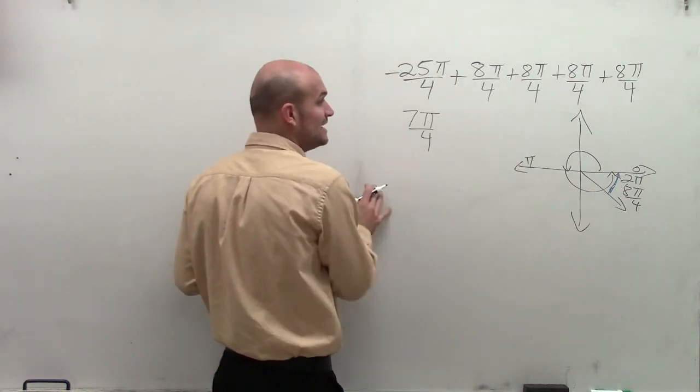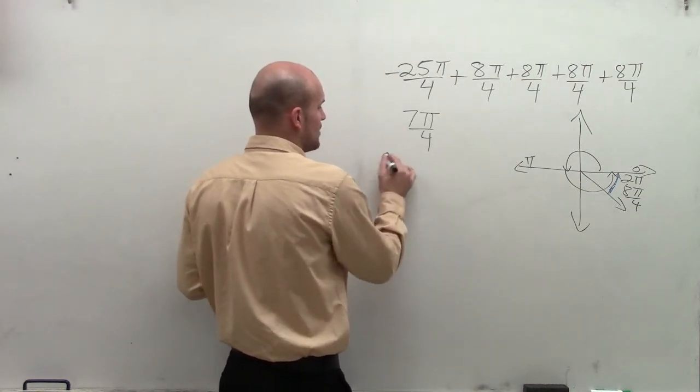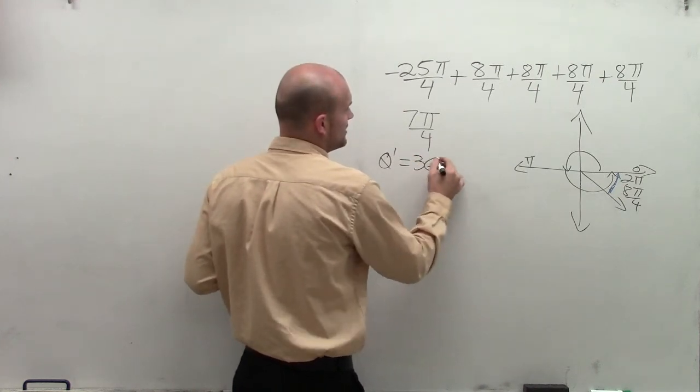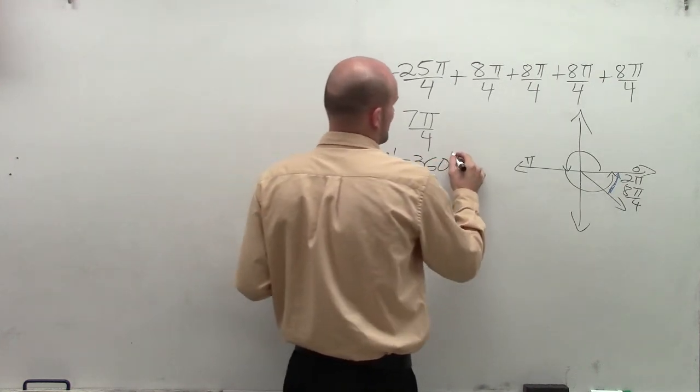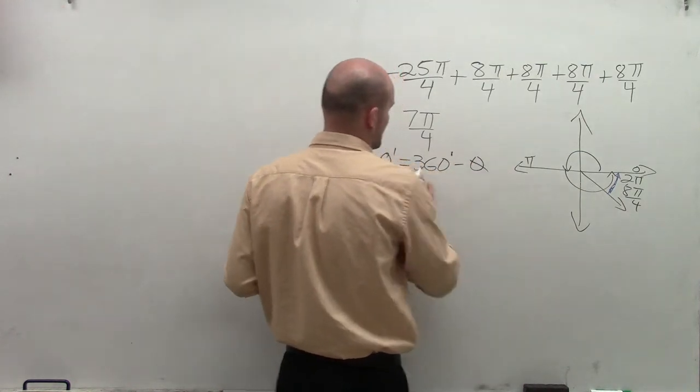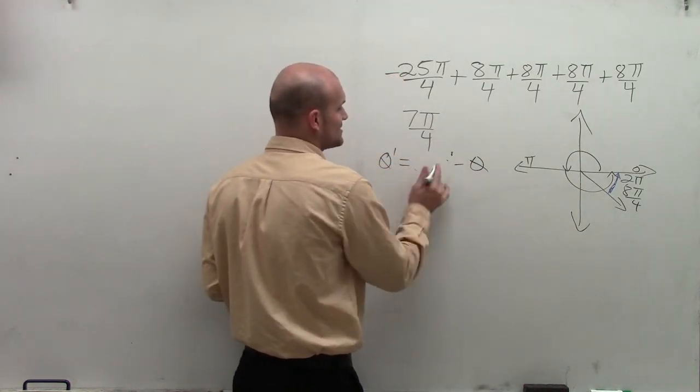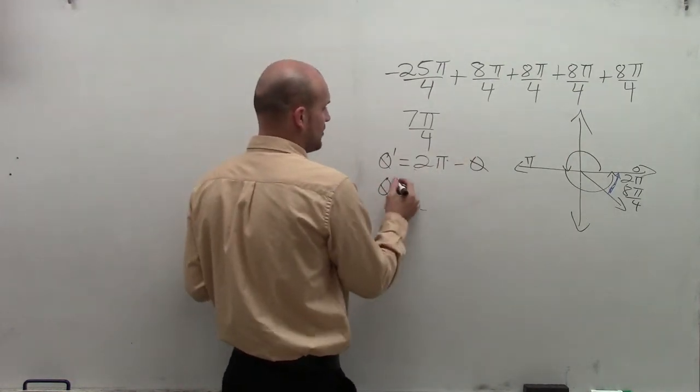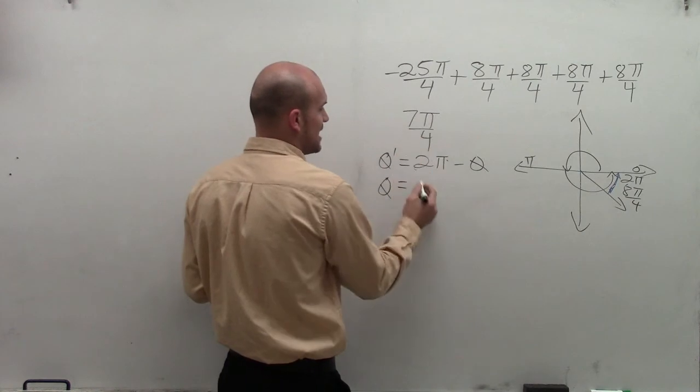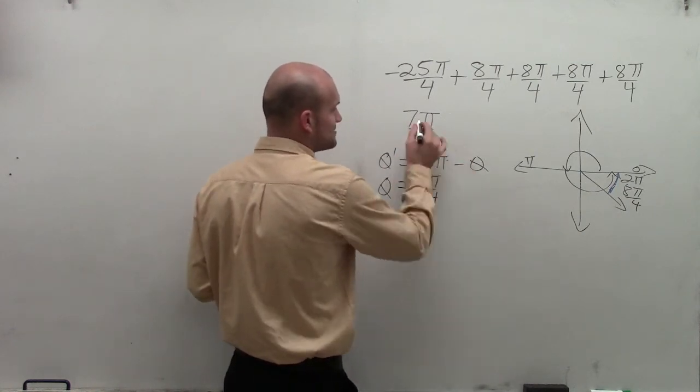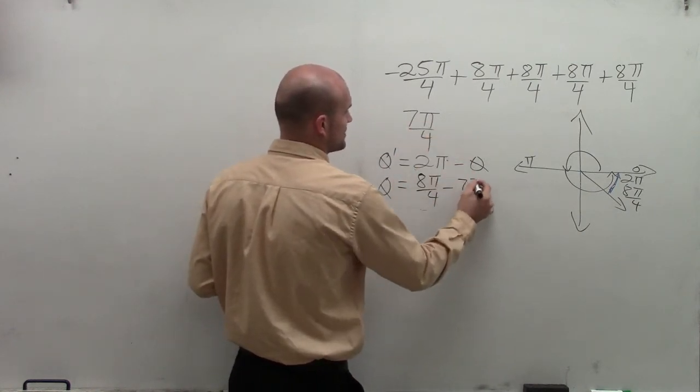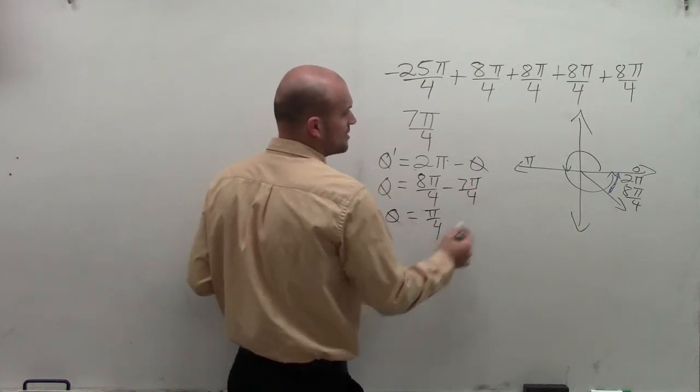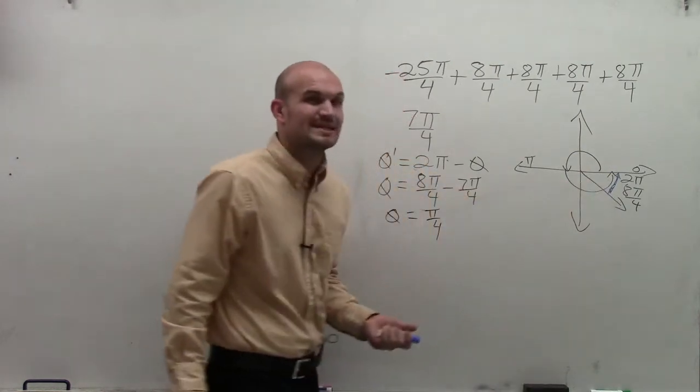The formula to find any reference angle for any angle in the fourth quadrant is theta equals 360 degrees minus theta. I'm sorry, but we're not dealing with degrees, we're dealing with radians. So it's 2 pi minus theta. Therefore, to change this into terms with denominator of 4, I have 8 pi over 4 minus my theta, which is 7 pi over 4. When doing my math, I end up getting pi over 4, which we were able to reason earlier.